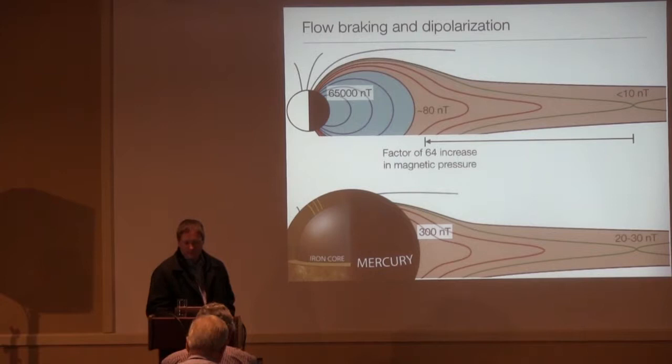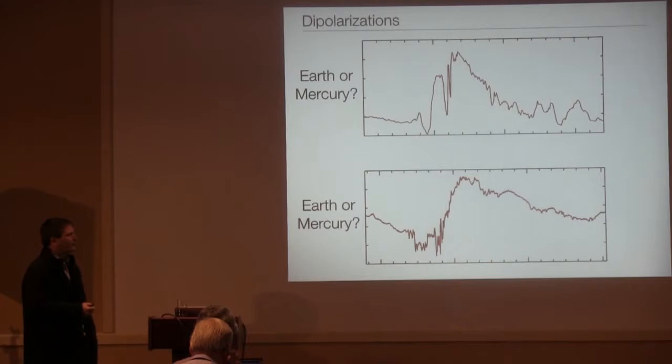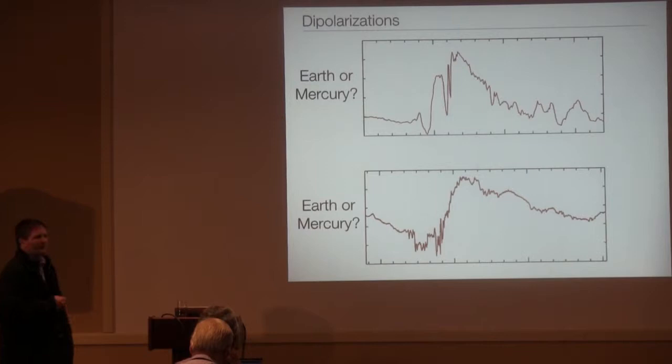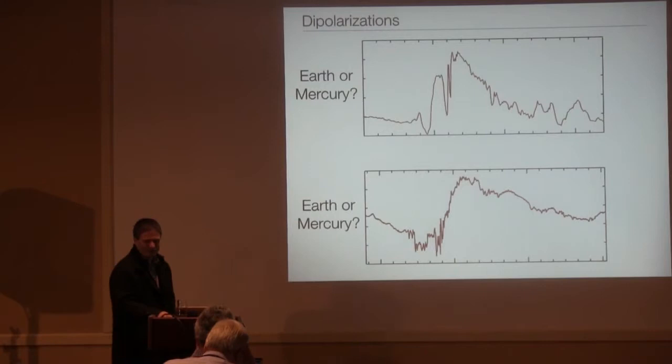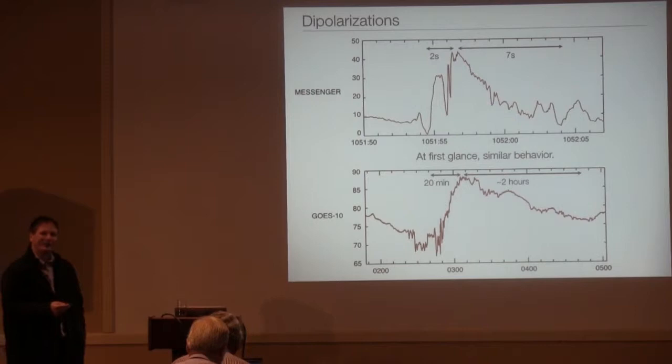Now, it really got me interested in substorm current wedge at Mercury were these observations of dipolarization events. And dipolarization is intimately tied to the substorm current wedge. In fact, you can't really have a substorm current wedge without dipolarization. Here, I've plotted two examples of dipolarization events. One's from MESSENGER at Mercury, one's from GOES at Earth. I've removed the labels that would give the answer away. These are both BZ, vertical component, equatorial region. So comparing apples and apples basically. So in your head, hopefully you've picked which one you think is which. The top is MESSENGER. And you notice that even though they look the same without the labels, as soon as you put the labels on, you can see immediately two very distinct differences.